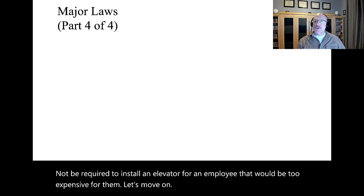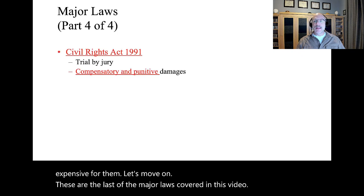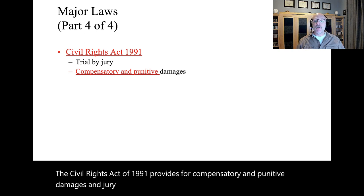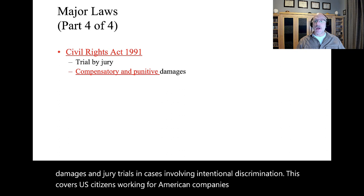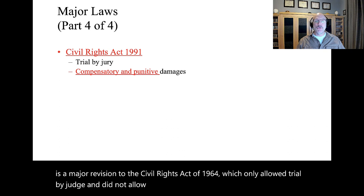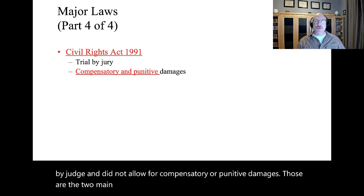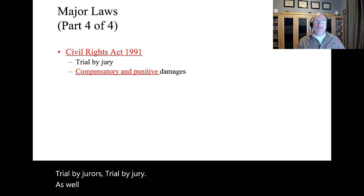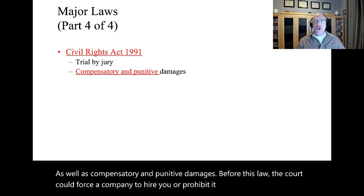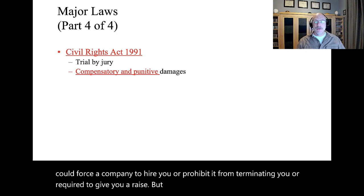The Civil Rights Act of 1991 provides for compensatory and punitive damages and jury trials in cases involving intentional discrimination. This covers U.S. citizens working for American companies overseas as well. This is a major revision to the Civil Rights Act of 1964, which only allowed trial by judge and did not allow compensatory or punitive damages. Before this law, the court could force a company to hire you or give you a raise, but that was all — and then who really wants to work at a place they had to sue?